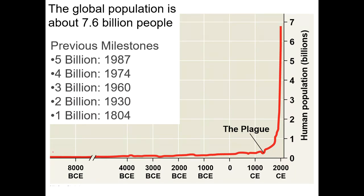These are some human population milestones, which I think are really interesting to look at. In 1804 we were at about a billion people, and then more than 100 years later we reached 2 billion — that's a pretty fast rate of growth.